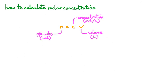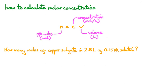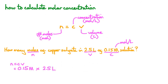Let's try using this on an example. How many moles of copper sulphate are in 2.5 litres of a 0.15 molar solution? So V is 2.5 litres and C is 0.15 molar — molar is simply another way to write moles per litre. We're being asked to find N, the number of moles. Using N equals CV, we get 0.15 molar multiplied by 2.5 litres, giving us an answer of 0.375 moles.